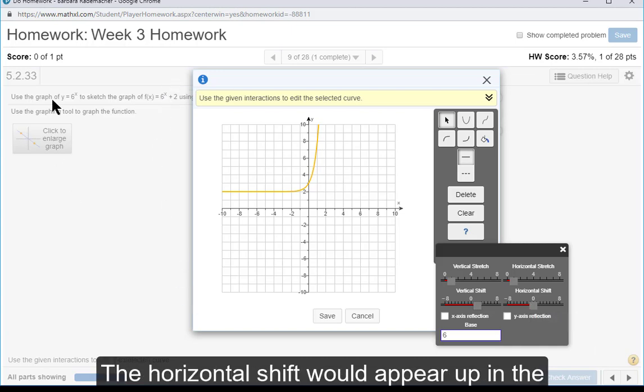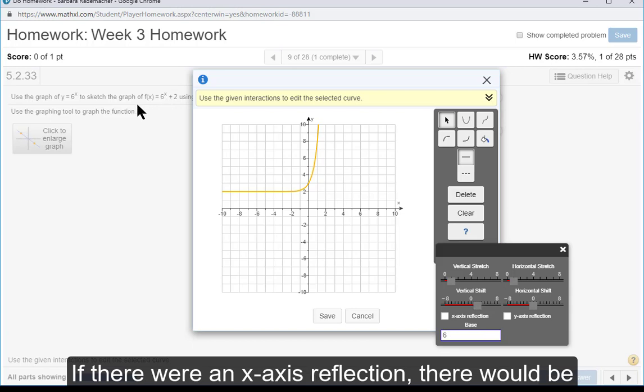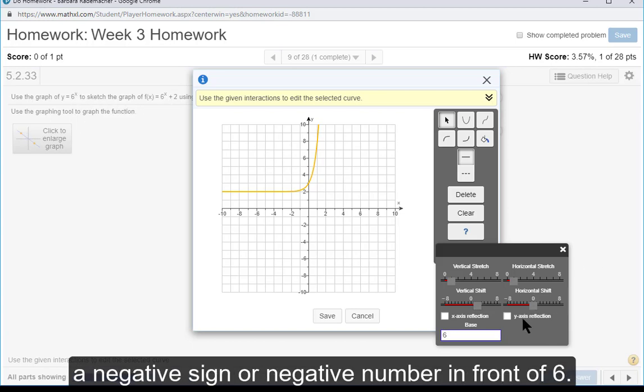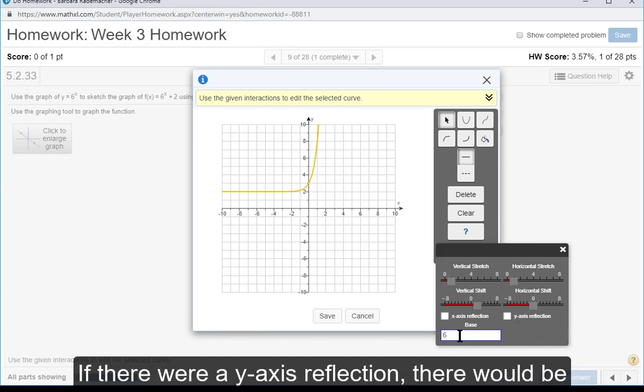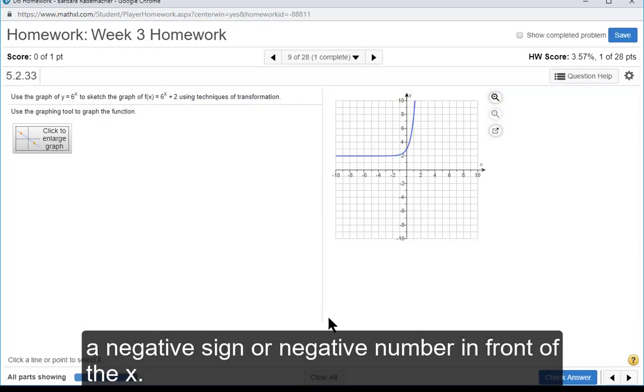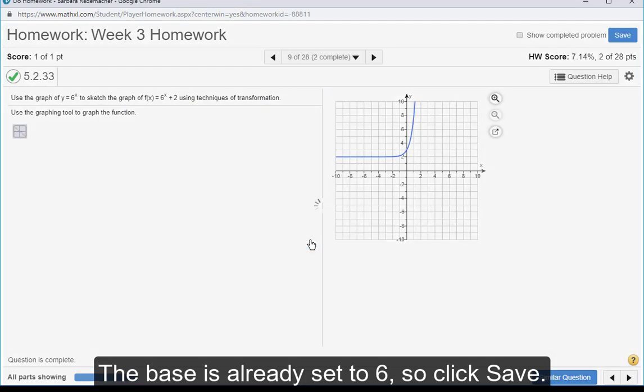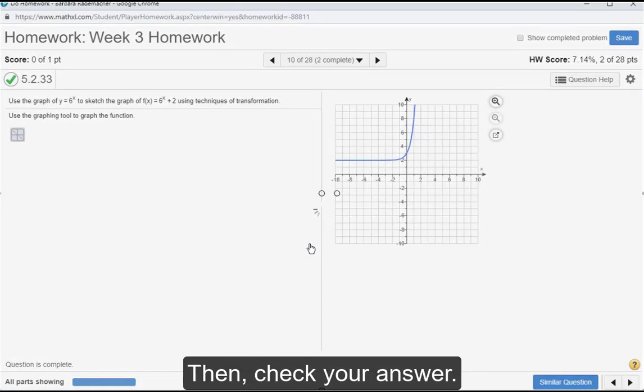The horizontal shift would appear up in the exponent with x, but it's not there, so it's 0. If there were an x-axis reflection, there would be a negative sign in front of 6. If there were a y-axis reflection, there would be a negative sign in front of x. The base is already set to 6, so click Save, then check your answer.